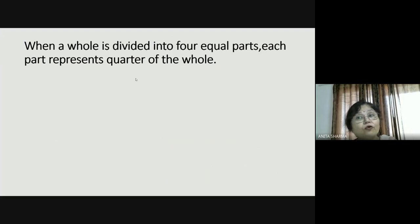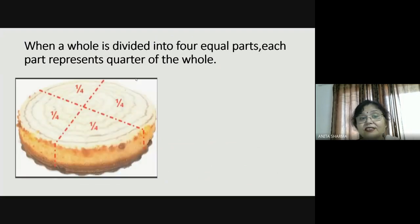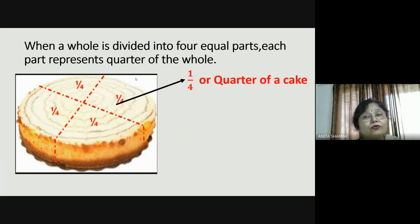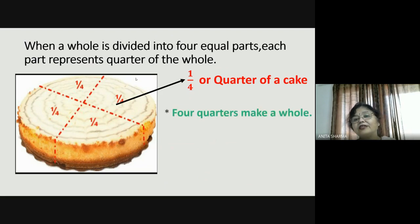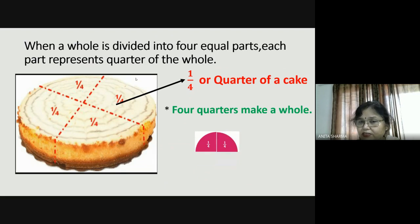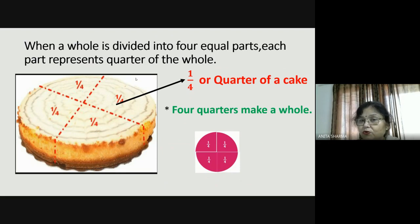When a whole is divided into four equal parts, each part represents a quarter of the whole. Just see — here is a cake divided into four equal parts. This one part is one-fourth of the cake, or a quarter of the cake. If I put together all the quarters, it makes a whole. This is one quarter, this is another quarter — two quarters, three quarters, and four quarters — it completes the whole. Four quarters make a whole.